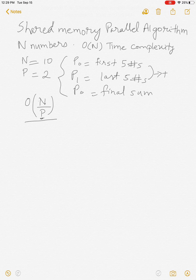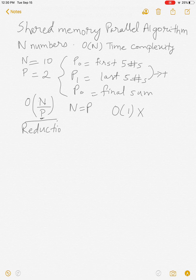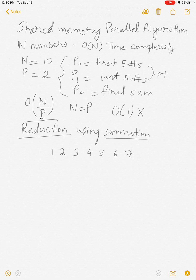If n equals P, then n/P becomes n/n which is O(1), but we cannot add a bunch of numbers in O(1) time. So we need to improve this. To complete the addition, let's talk about reduction. Reduction basically means using a tree-like algorithm to do summation or some other operation.